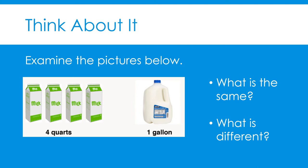Think about it — same but different. Examine the pictures below. What is the same? What is different? You might have said the two pictures are the same because they both represent the same capacity. Four quarts is the same as one gallon, and both pictures represent an amount of milk. You might have said the two pictures are different because the containers of milk are different sizes. Each quart contains one-fourth of a gallon of milk, and the gallon contains four quarts of milk.